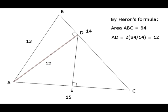Since we know the length of all three sides of triangle ABC, we can easily calculate its area. It's 84. And since we know the length of the base, it's 14, we can calculate the length of the altitude AD. It's 12.